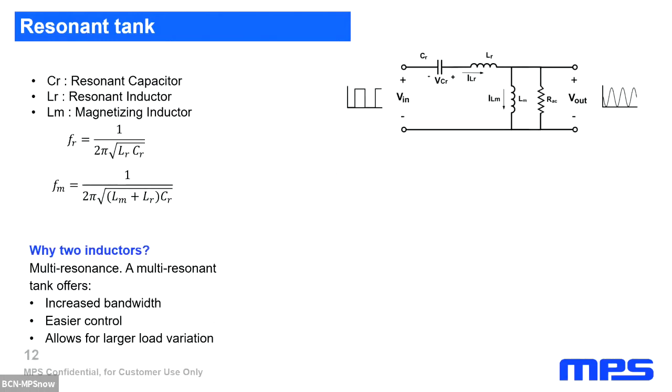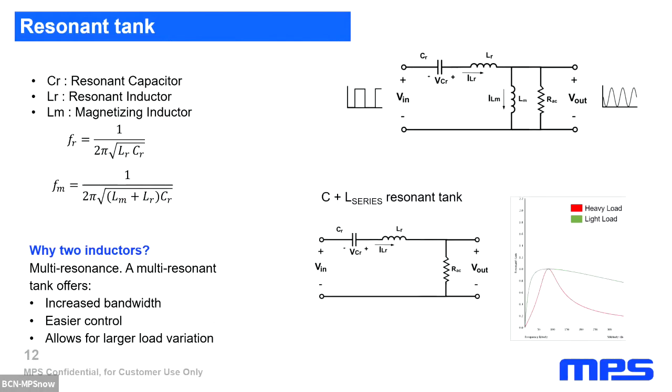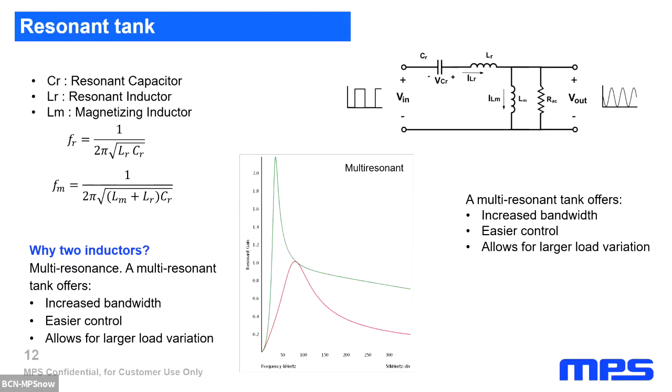You may be asking yourself why there are two inductors in this converter. This is understood by observing the tank's response to heavy and light loads depending on the inductor present in the circuit. With only the series inductor, there's a clear resonant peak at the tank's resonant frequency for the heavy load, whereas with the light load there is a much larger bandwidth. On the other hand, with only the magnetizing inductor, the heavy load does not peak and the light load has a large gain at the magnetizing resonant frequency. By joining both these inductors, what we get is a frequency response that will adequately respond to a much larger range of loads and will enable stable control for all operation conditions.